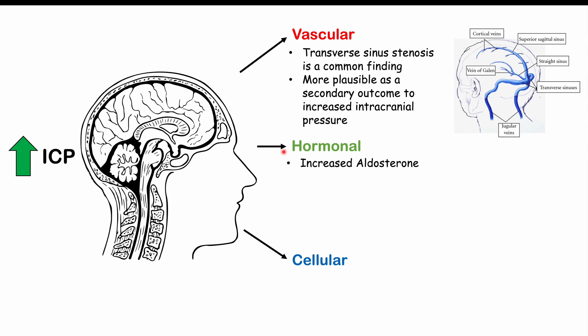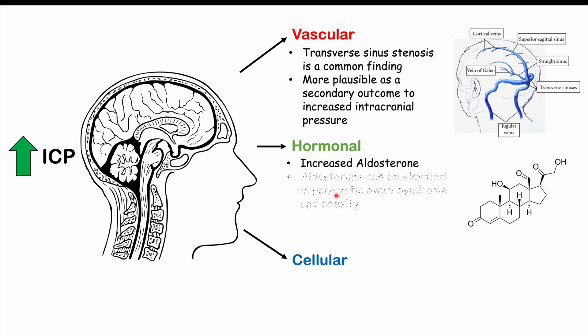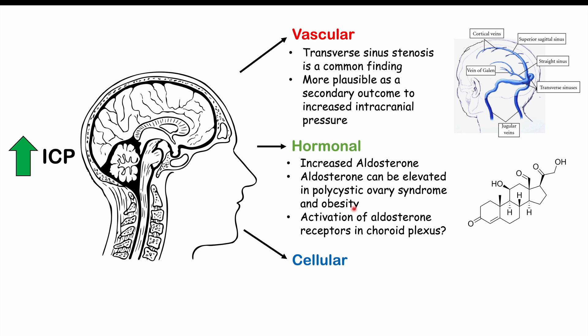The second proposed mechanism is increased aldosterone. Aldosterone is a hormone produced from the adrenal cortex, and it can be elevated in polycystic ovary syndrome and obesity — tying in with risk factors of being female and overweight. Elevated aldosterone may lead to overactivation of aldosterone receptors in the choroid plexus, increasing CSF production. However, this theory is weakened by the fact that children with obesity do not appear to be at increased risk for IIH.